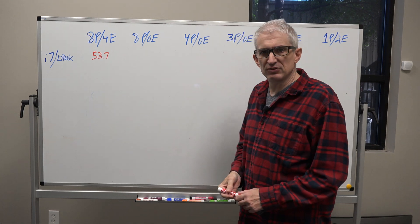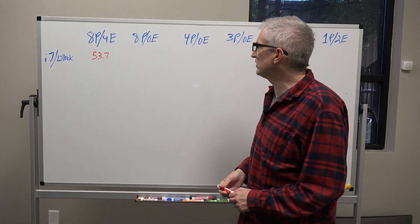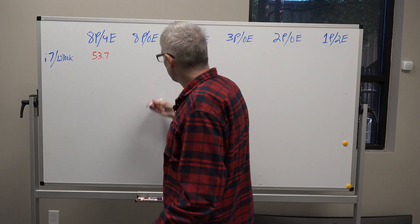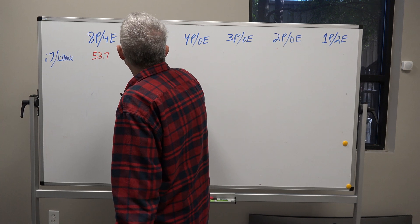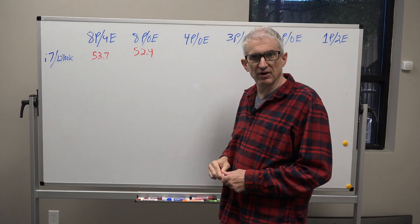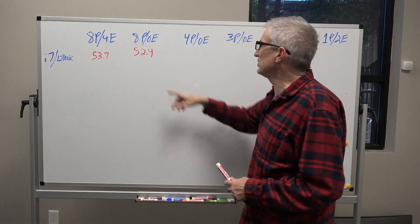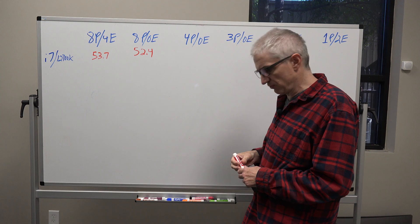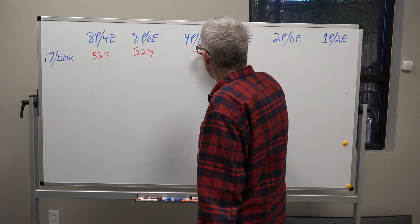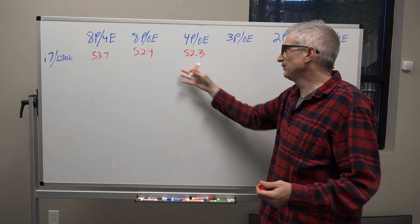I ran it again with eight performance cores and zero efficiency cores — I simply disabled the efficiency cores — and got 52.4, which is a very small difference, really within the margin of error. So I skipped down to four performance cores and zero efficiency cores. When I did that, I got 52.3 — again, really no difference.